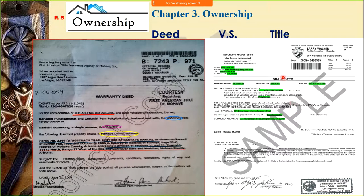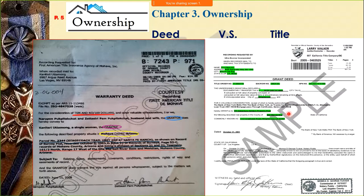Although in California we call it a grant deed, everything is essentially the same. The deed can be any piece of paper. The requirements of a deed are: you need to have a grantor and grantee, the consideration which is the money, and a signature. Then you find a notary public to get the document notarized, then you go to the county to get it recorded.